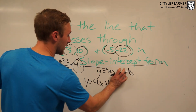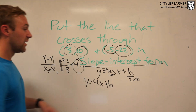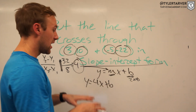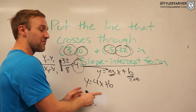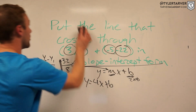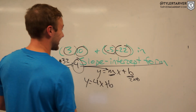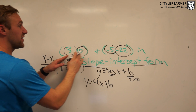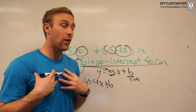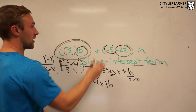So now we have y equals 4x plus b. We need to find b. The way to do that is to take either of your coordinates, plug them in for x and y, and solve for what you don't know — which is b. Out of these two coordinates, I prefer to use the positive one, so I'll use (3, 10).